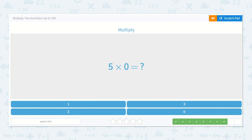5 times 7 is 5 times 7. I know that if I have 5 zero times, I have 0. So 0 is my answer.